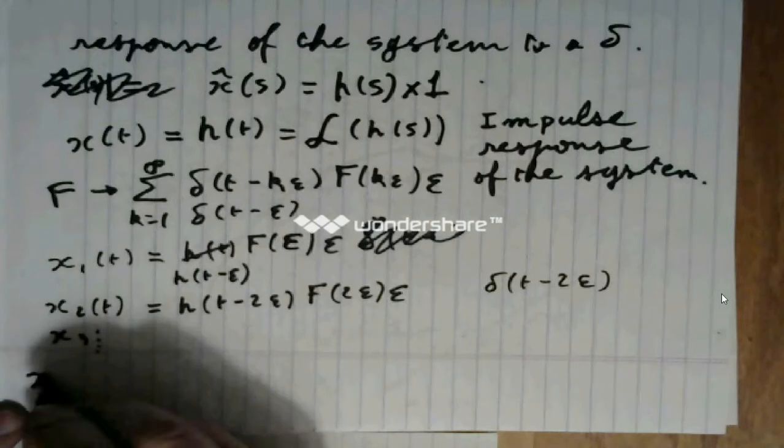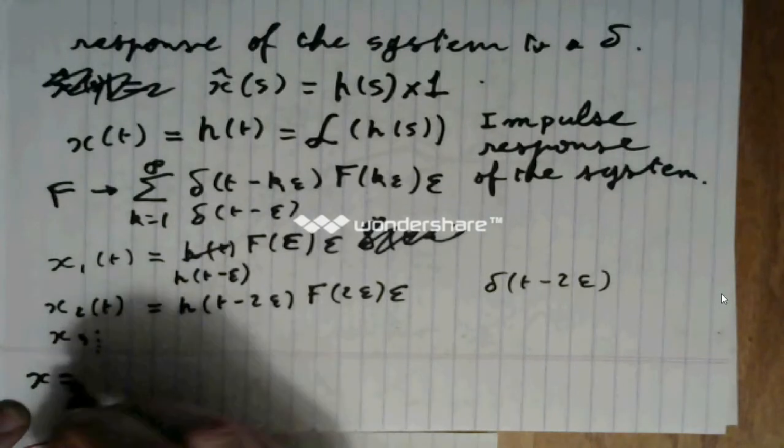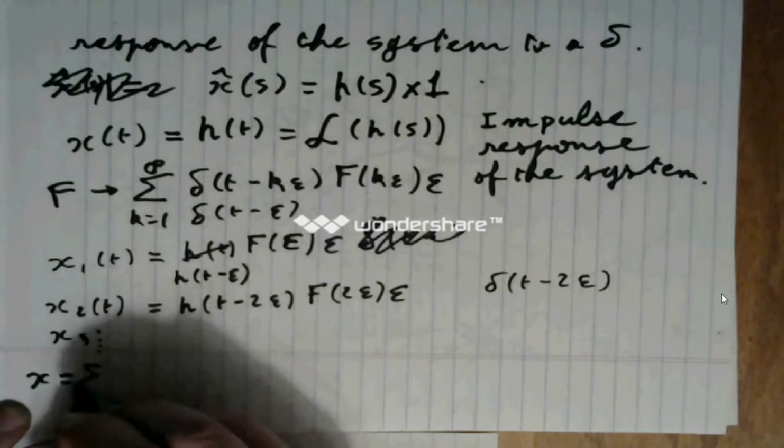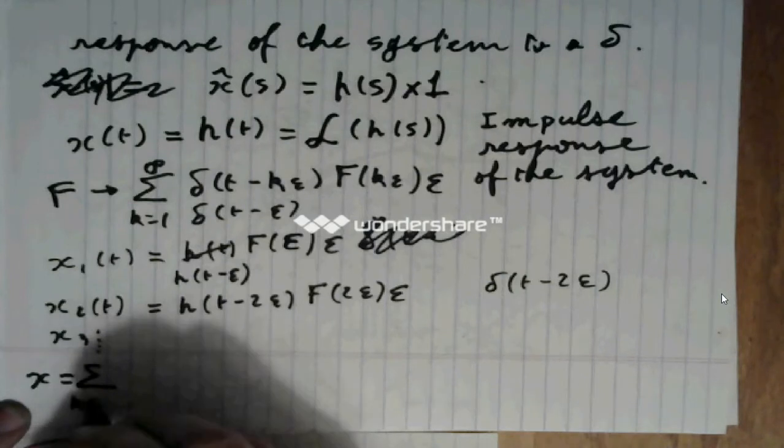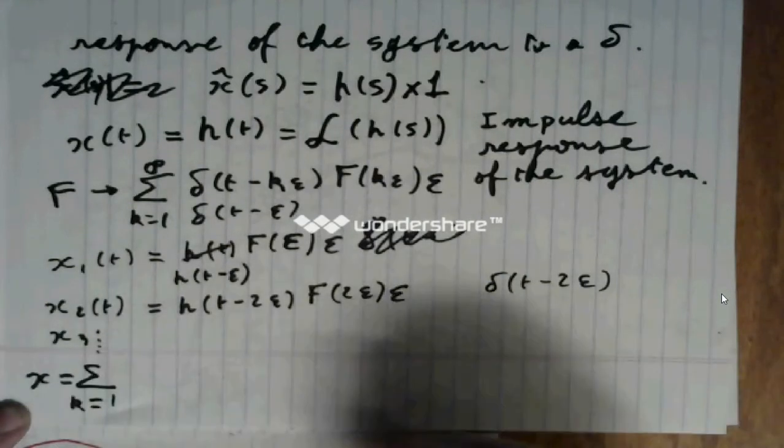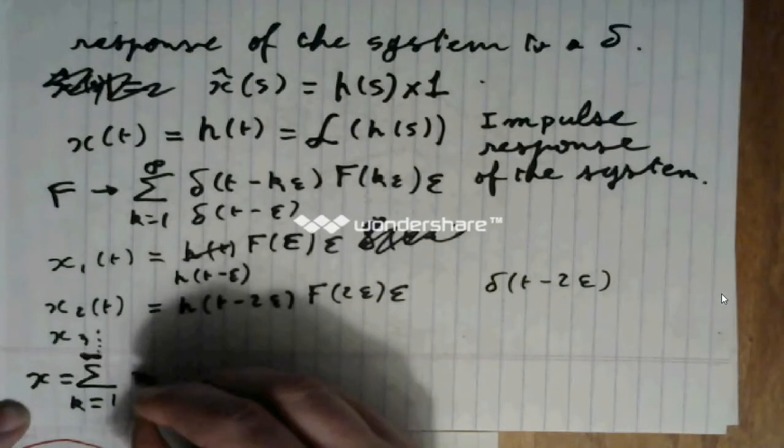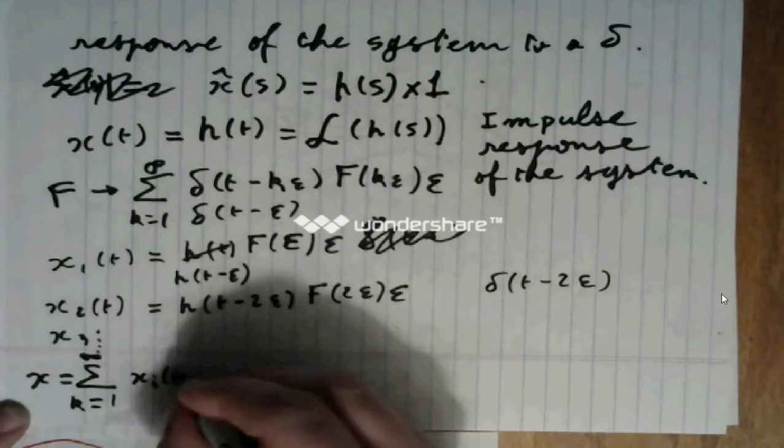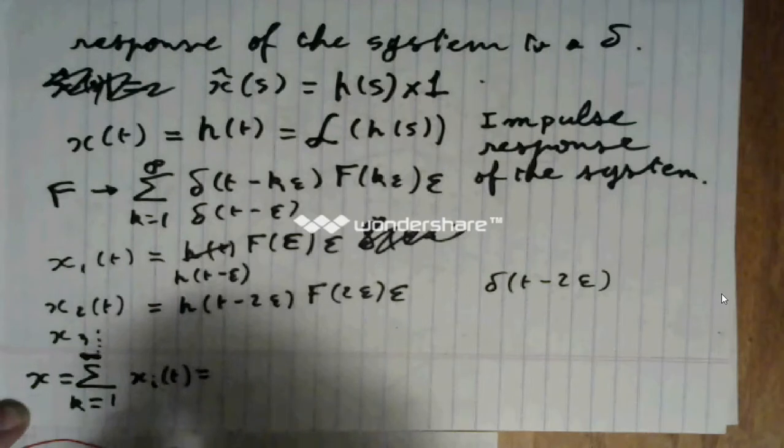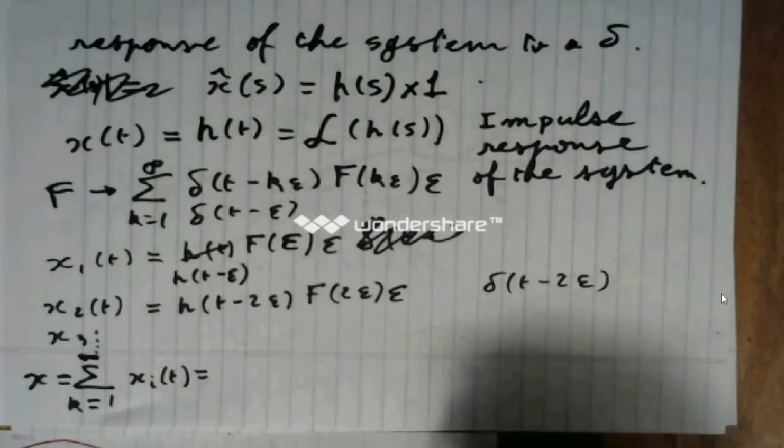To obtain the response x, we just sum up from k equals 1 to infinity of the xi's of t.